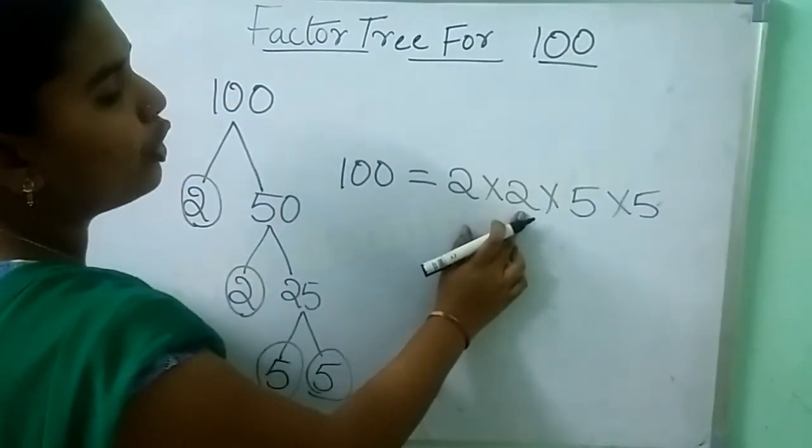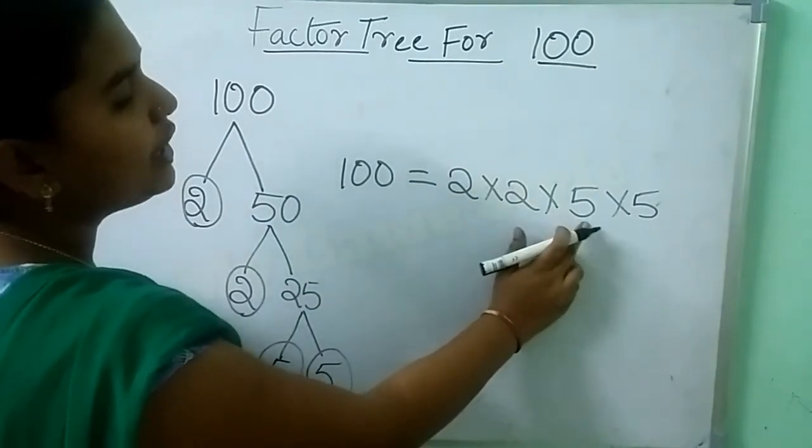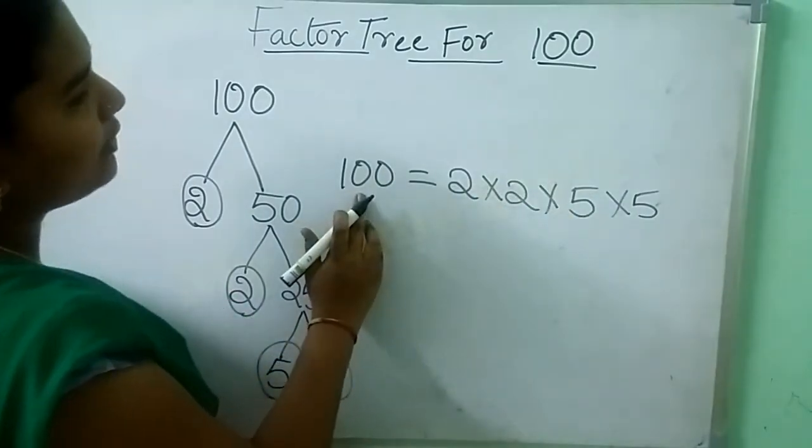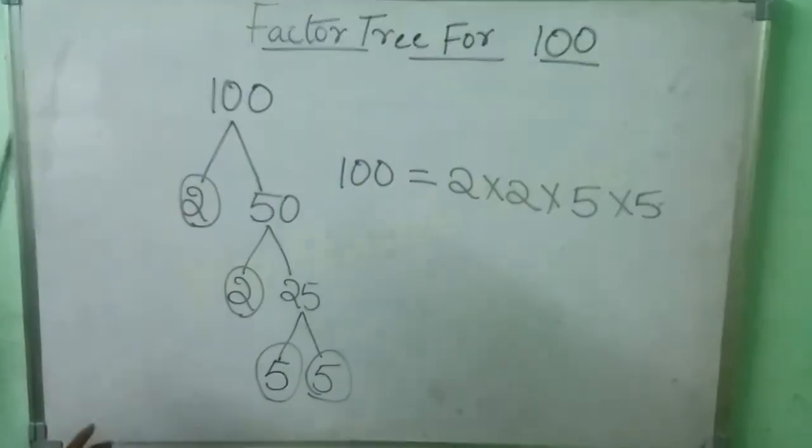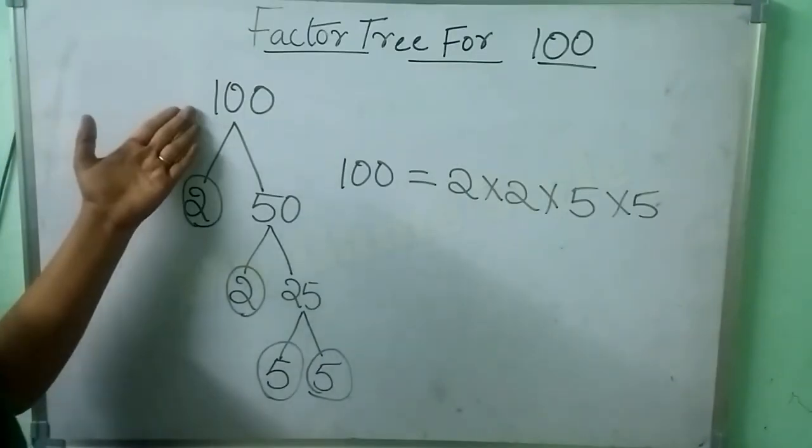So 2 times 2 is 4. 4 times 5 is 20. 20 times 5 is 100. So this is how we need to find out the factorization of 100.